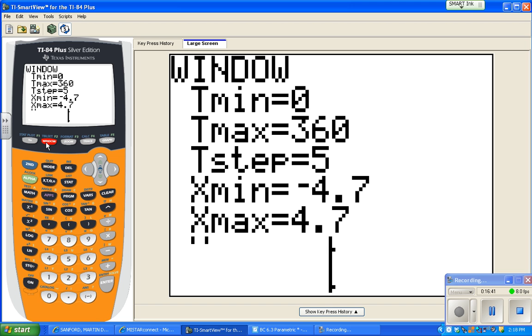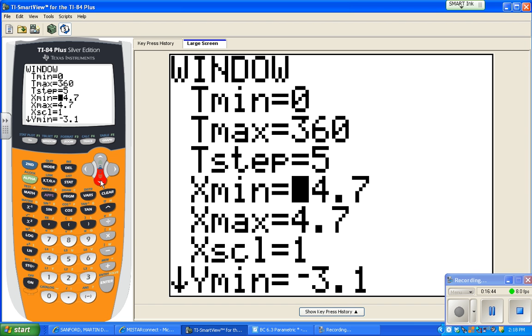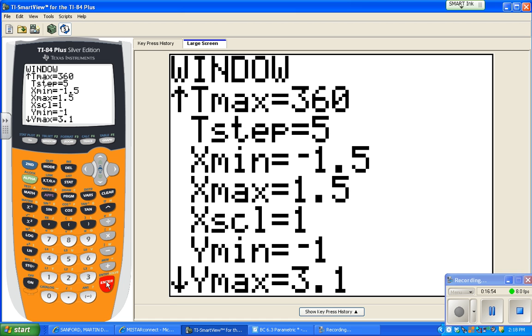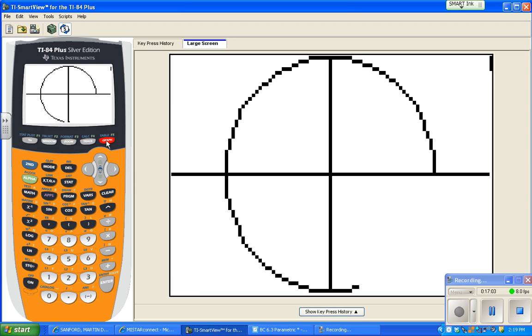I'm going to change my window. What I'm going to do is change my x's to go from negative 1.5 to 1.5, and my y's from negative 1 to 1. The only reason I'm changing it to these, the screen's wider than it is tall, and so I want it to look right. So I'm going to push graph again, and there it is. There's a circle that fills up the whole screen.